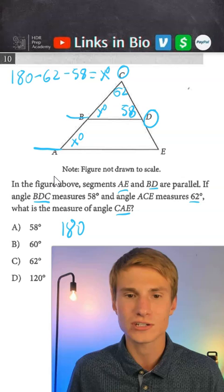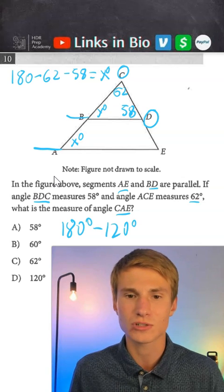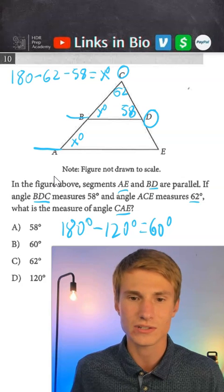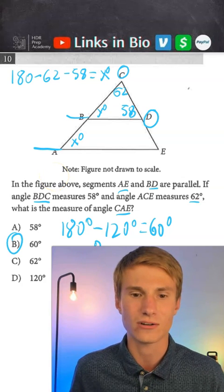From here, we see that's going to be 180 degrees minus 120 degrees, which we know is going to leave us with 60 degrees as angle measure X. So our answer is going to be answer choice B, 60 degrees is angle X.